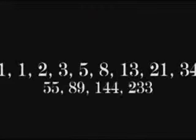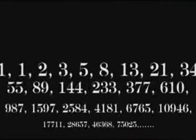Around 1200 A.D., a man named Leonardo Pisano, better known as Fibonacci, discovered a sequence of numbers that created a very interesting pattern. The sequence begins with the numbers 1, 1, 2, 3, 5, 8, 13, 21, 34, and continues indefinitely. Each number is obtained by adding the last two digits together.